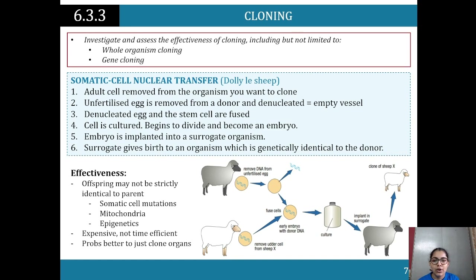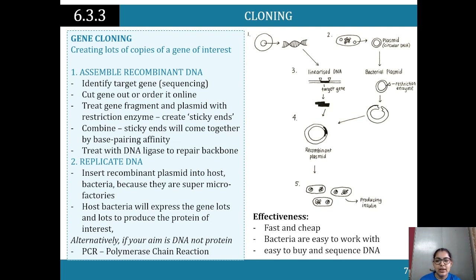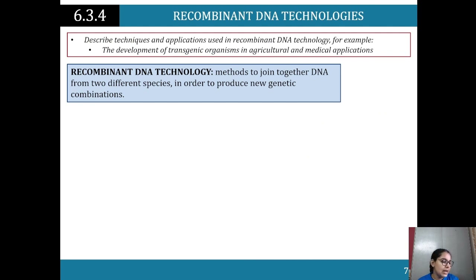Gene cloning creates many copies of a gene of interest by assembling recombinant DNA. First, identify the target gene. Cut the gene out or order a synthetic gene fragment, and treat the plasmid with restriction enzymes to create sticky ends. Combine the sticky ends by base-pairing affinity, then treat the solution with DNA ligase to repair the backbone. Replicate the recombinant plasmid into host bacteria - they act as micro-factories - expressing the gene to produce the protein of interest. Alternatively, if your aim is DNA not protein, use PCR.